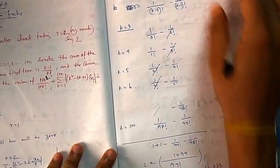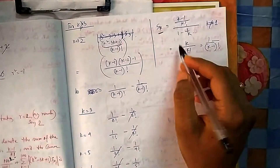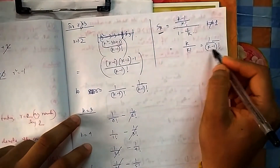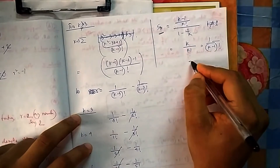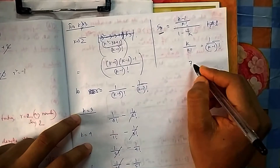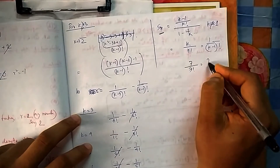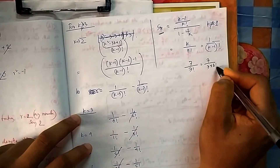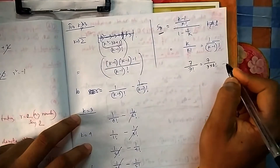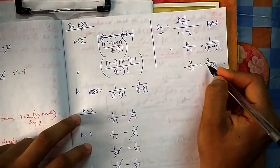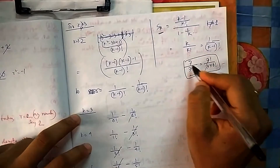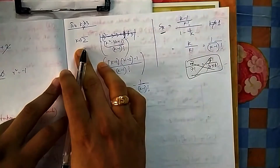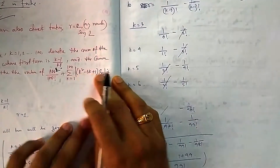Since k=1 needs to be handled separately, let's first compute the general formula. Substituting, we get S_k = 1/(k-1)!. You can verify: k/k! = k/[k·(k-1)!] = 1/(k-1)!. For example, with k=7: 7/7! = 7/[7·6!] = 1/6!. So S_k = 1/(k-1)!. Now they ask us to find (k²-3k+1)·S_k, so substituting S_k gives (k²-3k+1)/(k-1)!.